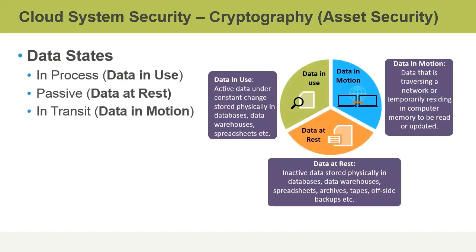Cryptography looks at data states, such as data in use, which is data in process; data at rest, which is passive data that's being stored; and data in motion, which is data being transmitted.